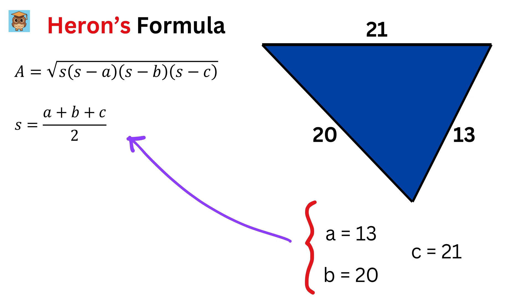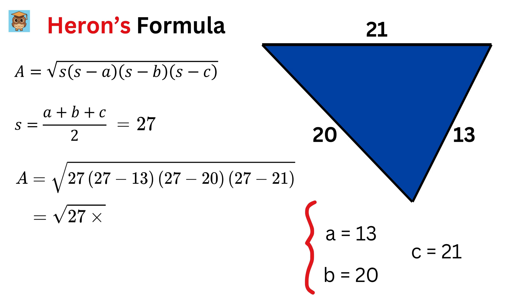Then, substitute them here to get the semi-perimeter, or s, as 13 plus 20 plus 21 over 2 or 27 units. So, the area of this triangle equals square root of 27 times 27 minus 13 times 27 minus 20 times 27 minus 21, or the square root of 27 times 14 times 7 times 6.